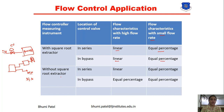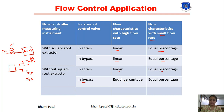Without a square root extractor and the control valve connected in series, we use linear characteristics for high flow rate and equal percentage for small flow rate. In bypass connection, we use flow characteristics for high flow rate and equal percentage for small flow rate.